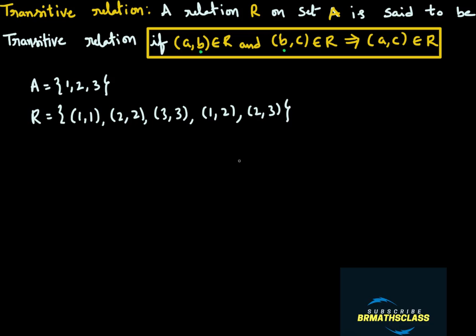Don't check the transitive relation randomly by taking any two ordered pairs. There is a trick — by using that trick, you won't get confused checking whether the relation is transitive or not. It may take time but you will get the exact answer. Now I will tell you what the trick is. You take the first ordered pair. What is that ordered pair? Ordered pair (1,1). It ends with 1. Now check: is there any other ordered pair which starts with 1? Yes — there is an ordered pair which starts with 1. That means you have identified an ordered pair (A,B) and (B,C). Now you have to check whether (A,C) is there in R or not.